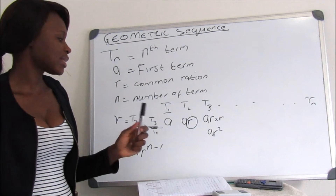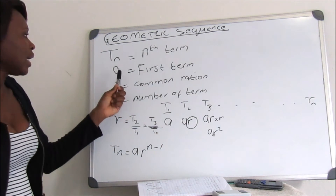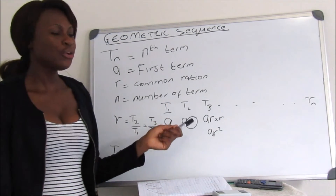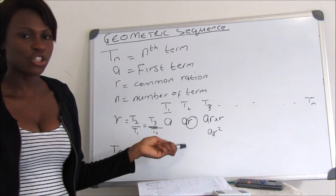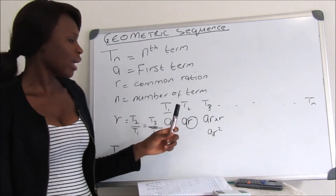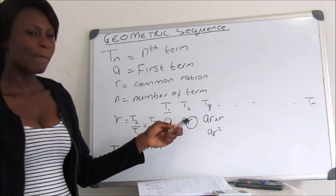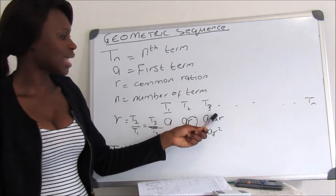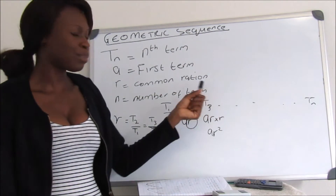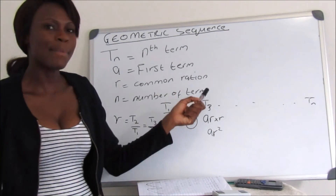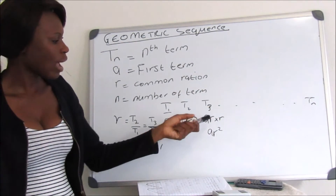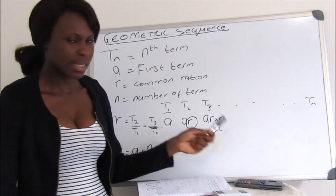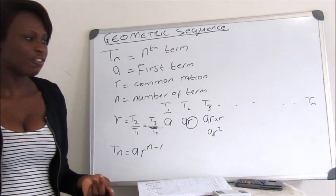If our first term is A, then to find the second term you multiply the previous term by the common ratio, so T2 equals A multiplied by R, which is AR. Then for the third term, it is the previous term T2 multiplied by the common ratio, so AR multiplied by R again, giving AR squared.